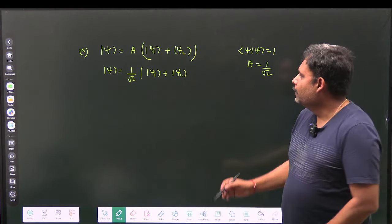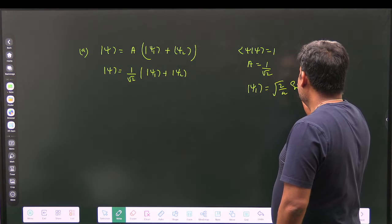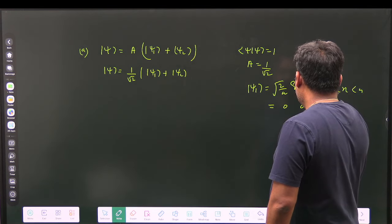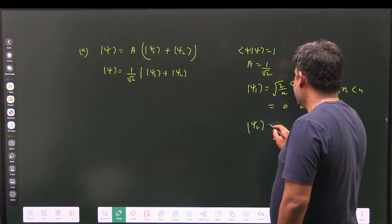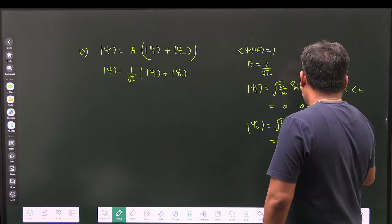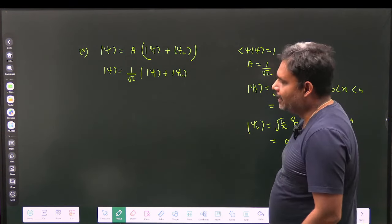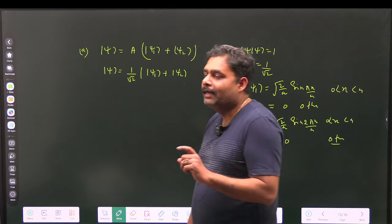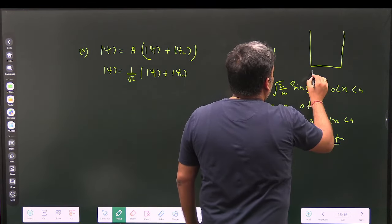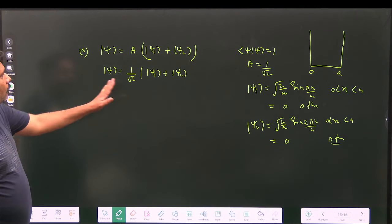ψ₁ is √(2/a) sin(πx/a) for x between 0 and a, and zero otherwise. ψ₂ is √(2/a) sin(2πx/a) for x between 0 and a, and zero otherwise. These two are stationary states, meaning they are eigenstates of the Hamiltonian. The potential is zero between 0 and a — the infinite square well.